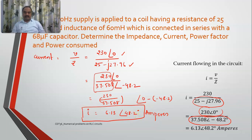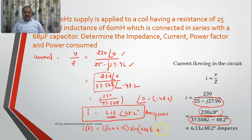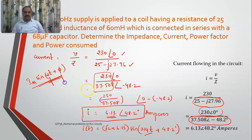If you want to write the instantaneous value, i(t) = √2 × 6.13 × sin(314t + 48.2°), because the general form is i(t) = Im·sin(ωt + φ). Here ω = 314, φ = 48.2°, and Im = √2 × Irms.